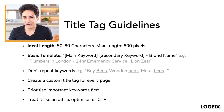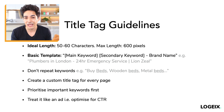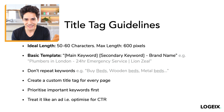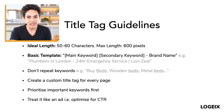Just include the main keyword, and optionally squeeze in secondary keywords if and only if you can. The same advice applies here: don't repeat keywords or words unless you absolutely need to. For example, 'buy beds, wooden beds, metal beds' is over-optimized — you could just say 'buy beds, wooden, metal.' They can see it's the buy beds page; you don't have to repeat 'beds' over and over. Don't repeat words — that's a good rule for most important on-page elements.